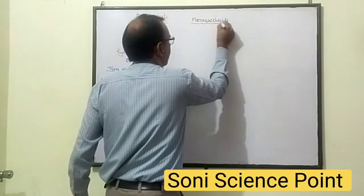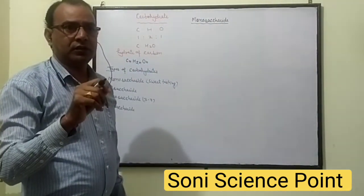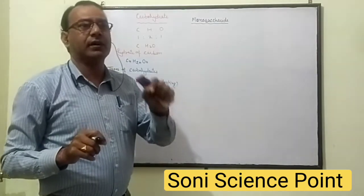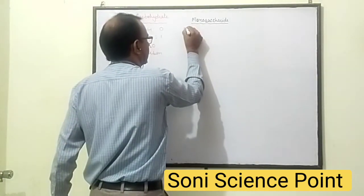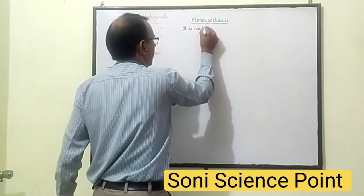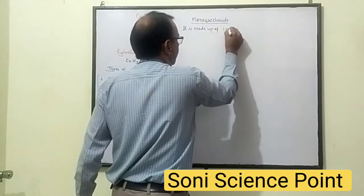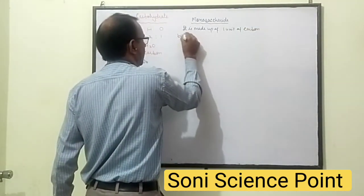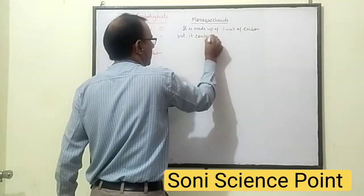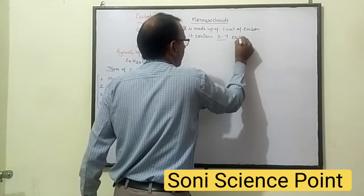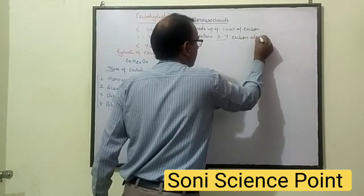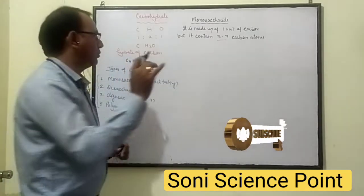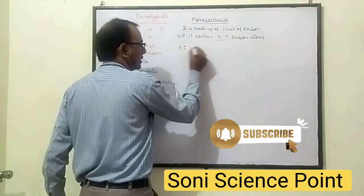Monosaccharide contains one unit of Carbon, in which three to seven carbon atoms are present. The term 'Saccharide' means sweet tasting, so Carbohydrates are known as Saccharide. The Monosaccharide which contains three Carbon molecules is called Triose, and the one with four Carbon molecules is called Tetrose.